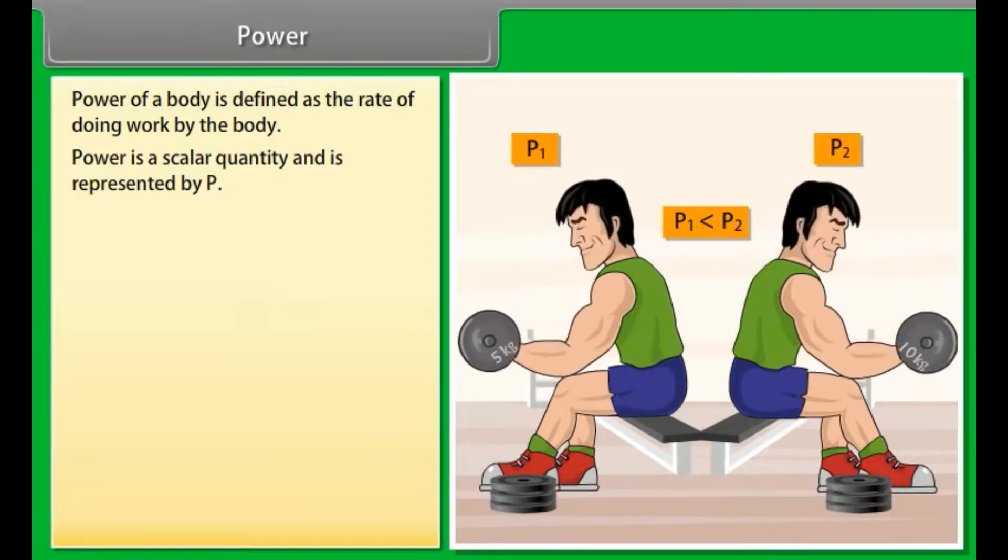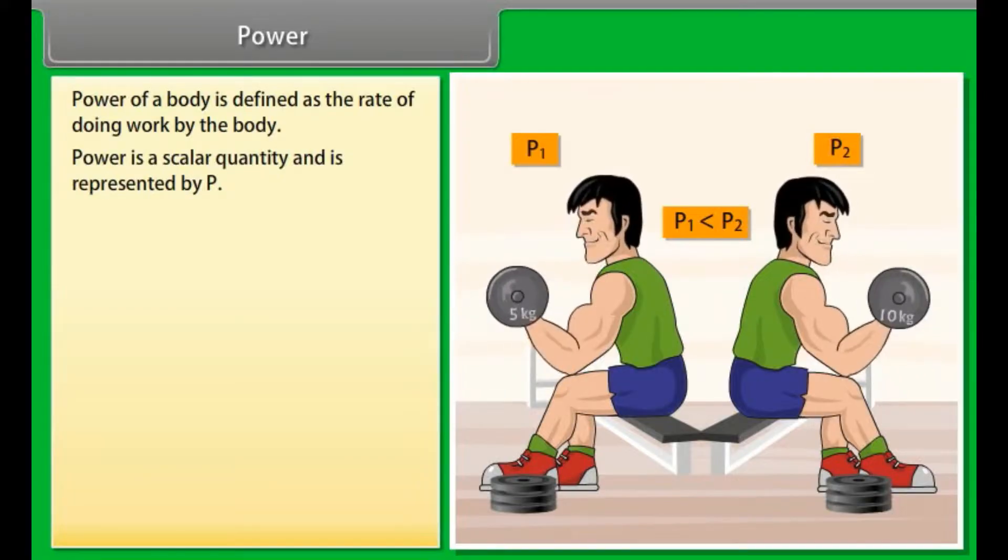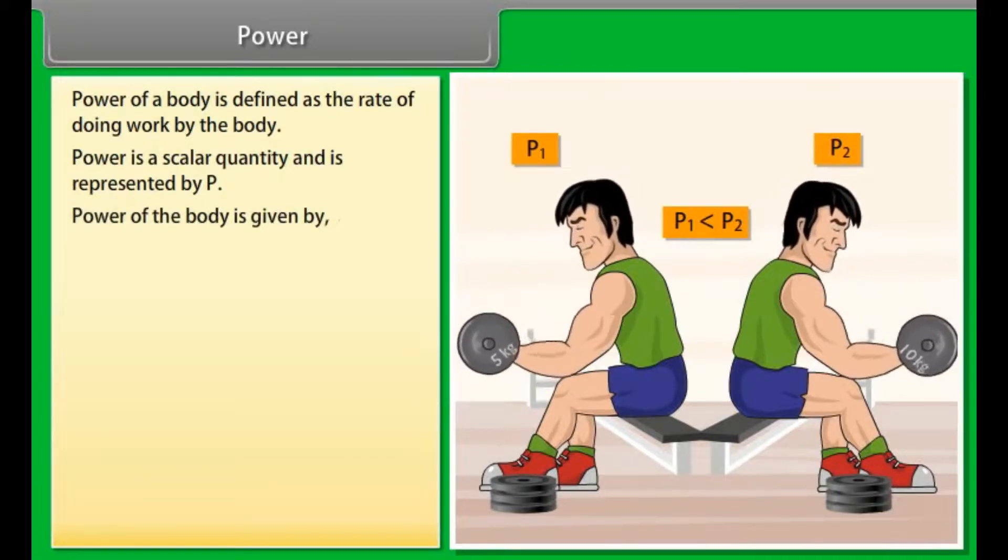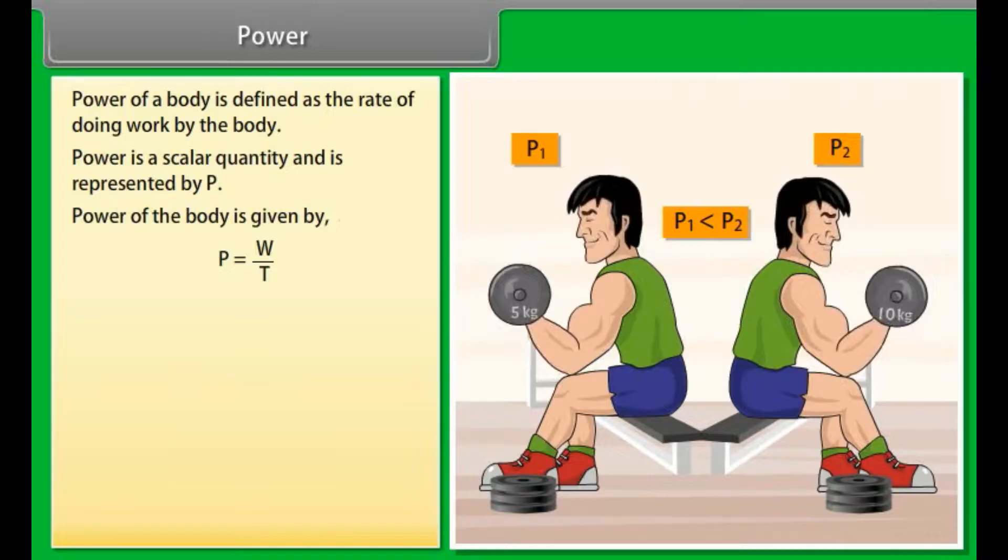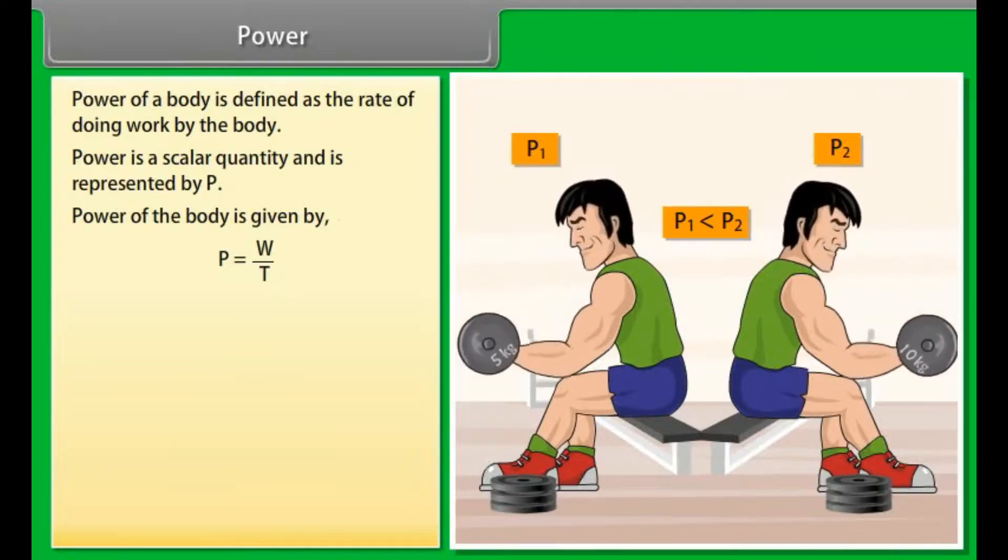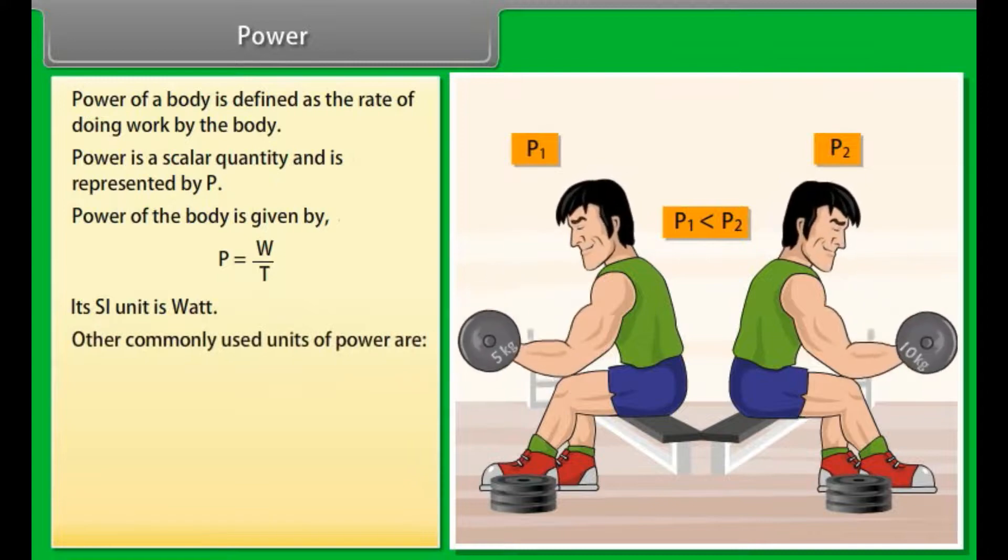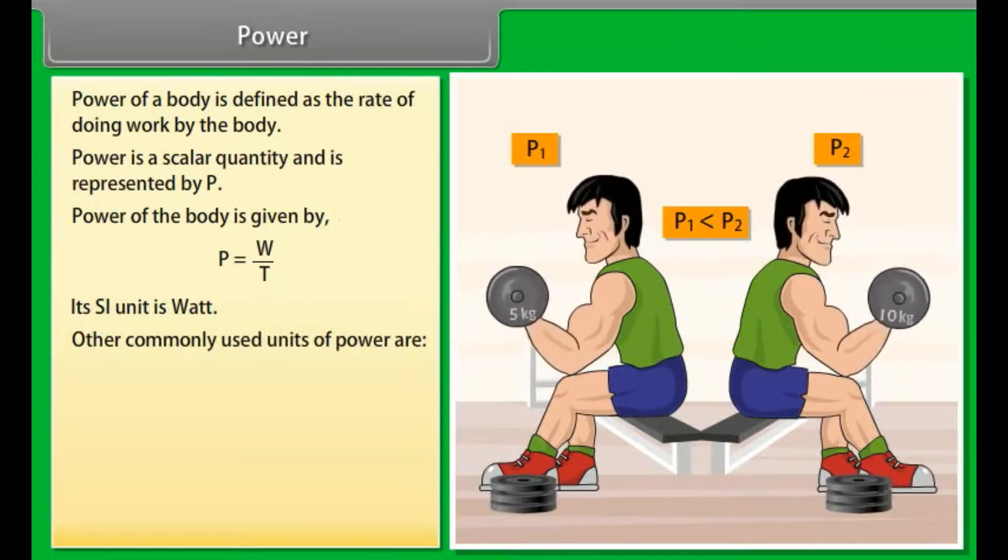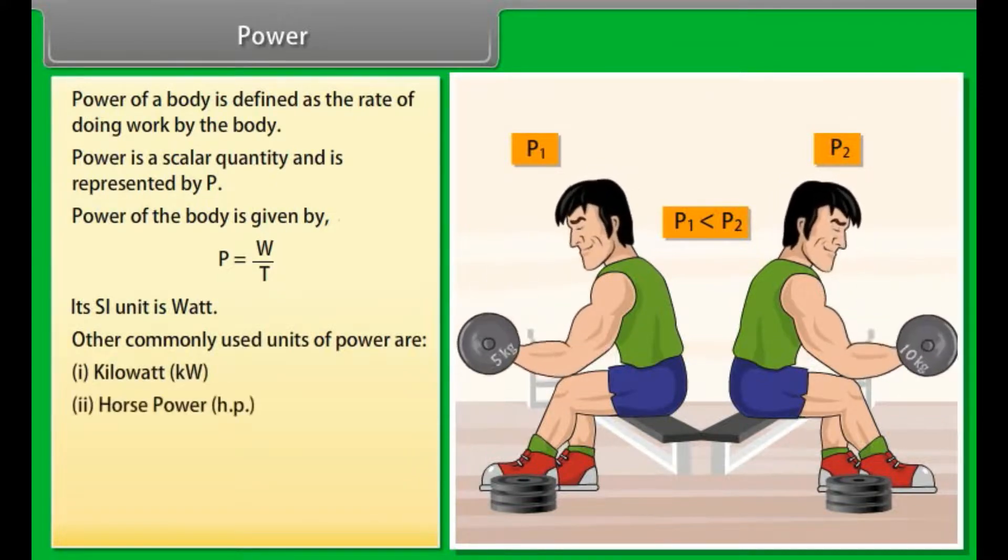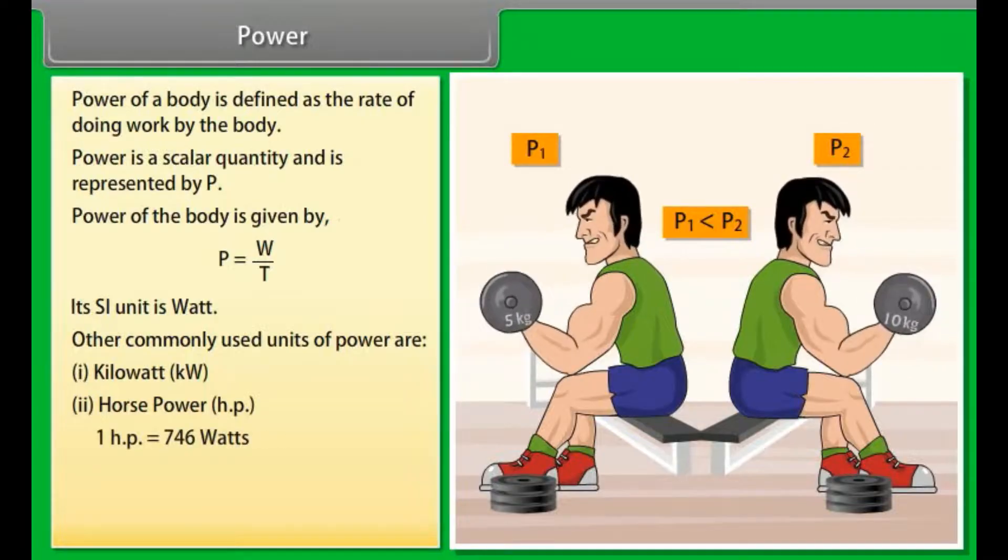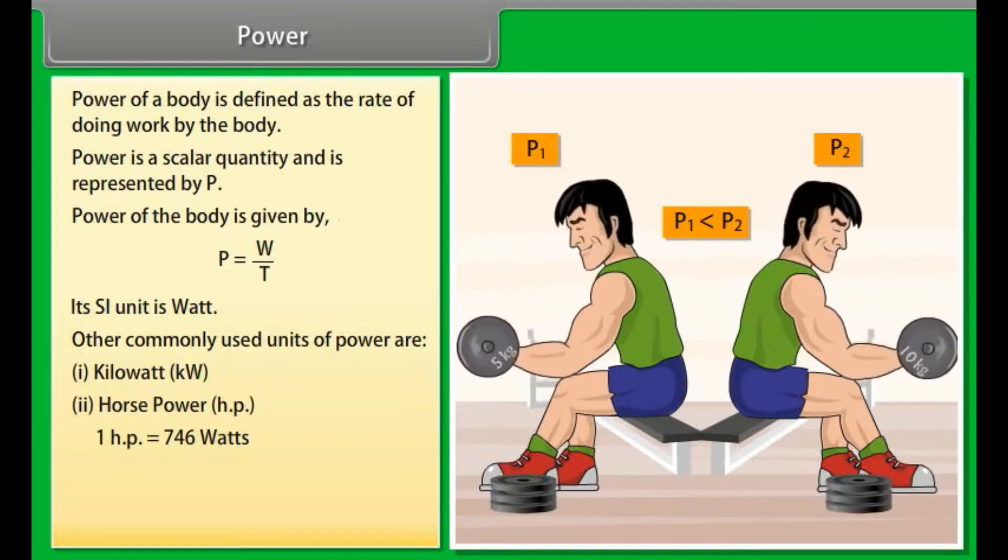Power is a scalar quantity and is represented by P. Power of a body is given by P = W/T. Its SI unit is watt. Other commonly used units of power are kilowatt and horsepower. One horsepower = 746 watts.